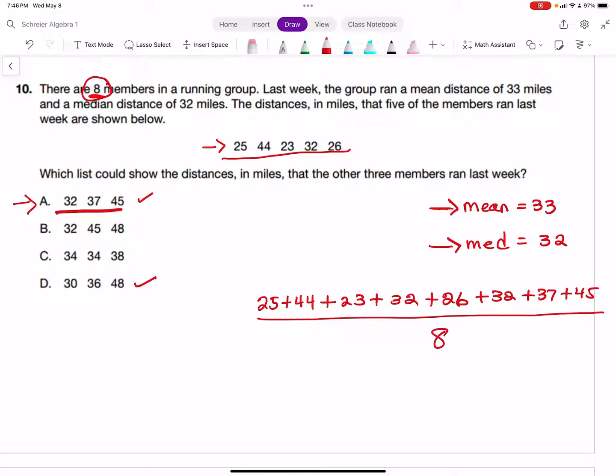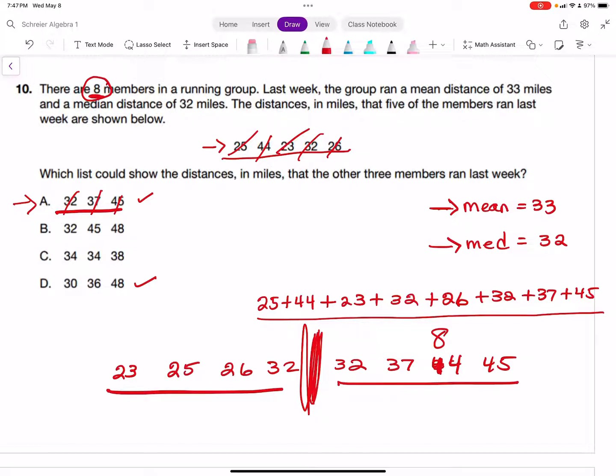Let's put the data in order. The smallest is 23, then 25, then 26, then 32 and 32, then 37, 44, and 45. The median is the data value in the middle. We have eight data values - these four are the first half, these four are the second half. The median is between 32 and 32, making it 32. So we're good. Answer choice A is our answer.